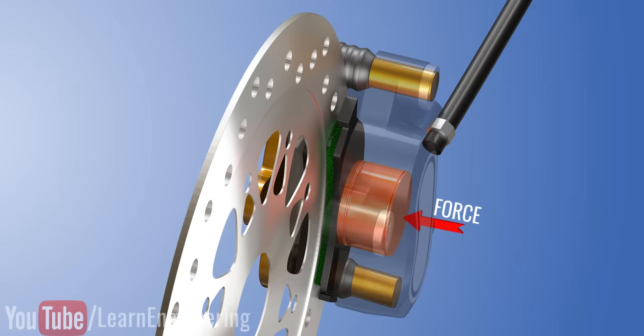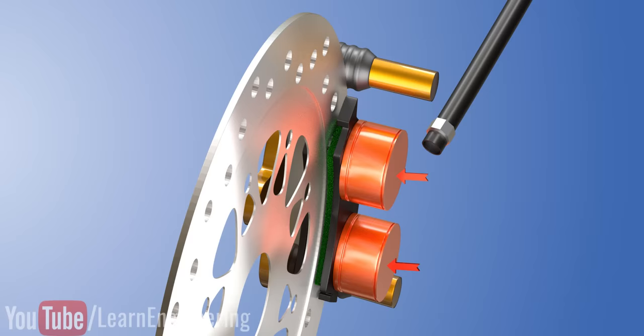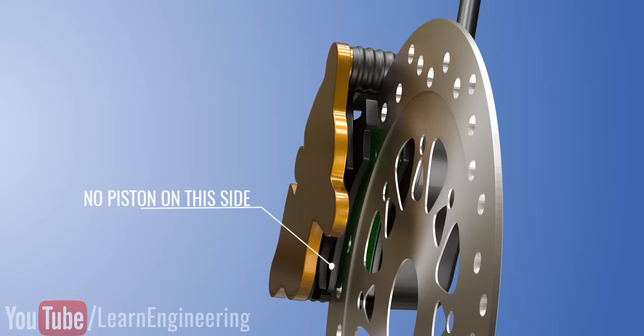The disc is directly connected to the wheel. To increase the area further, generally two pistons are used at the brake pad end. Another interesting thing you can observe about this mechanism is that pistons are there only on one side. So how does the brake pad on the other side move?